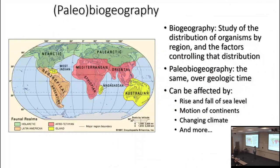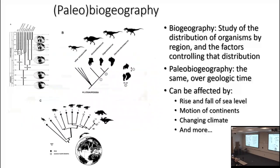One big aspect of modern community ecology is the recognition of biogeography — that different parts of the world have different characteristic sets of organisms. Biogeography itself is the study of the distribution of organisms by region and the factors controlling that distribution. Here you see one set of faunal realms in the modern world — the animals and plants of Madagascar are radically different than those in sub-Saharan Africa, which is geographically their closest region. We also have paleobiogeography, which looks at this over geologic time.